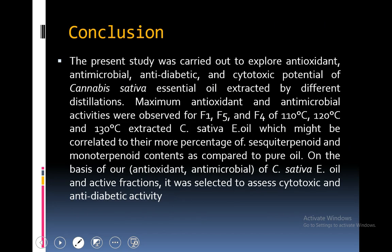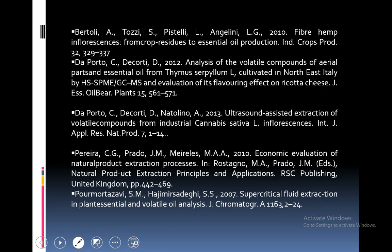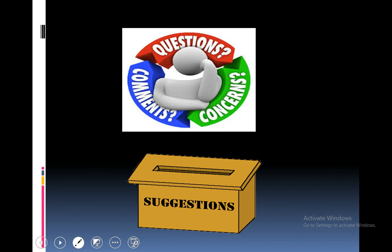In conclusion, the present study was carried out to explore the antioxidant, antimicrobial, antibiotic and cytotoxic potential of Cannabis sativa essential oil extracted by different distillation methods. Positive antioxidant and antimicrobial potentials were observed for F1, F5 and F4 fractions of 110°C, 120°C and 130°C extracted Cannabis sativa essential oil, which might be correlated to their higher percentage of sesquiterpenoid and monoterpenoid contents as compared to pure essential oil. On the basis of antioxidant and antimicrobial potential, Cannabis sativa essential oil was selected for cytotoxic and antidiabetic activity studies. Thank you so much for your questions, suggestions and comments.